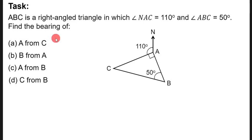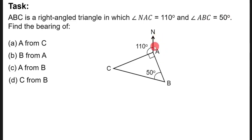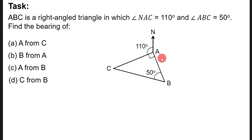This question is on bearings. The question reads: ABC is a right-angle triangle in which angle NSC is equal to 110 degrees, and angle ABC is equal to 50 degrees. Find: (a) the bearing of A from C, (b) the bearing of B from A, (c) the bearing of A from B, and (d) the bearing of C from B.